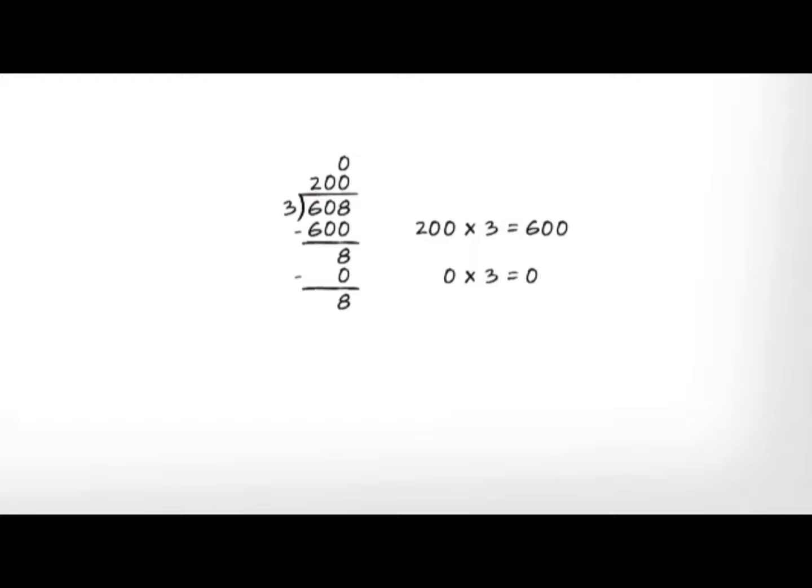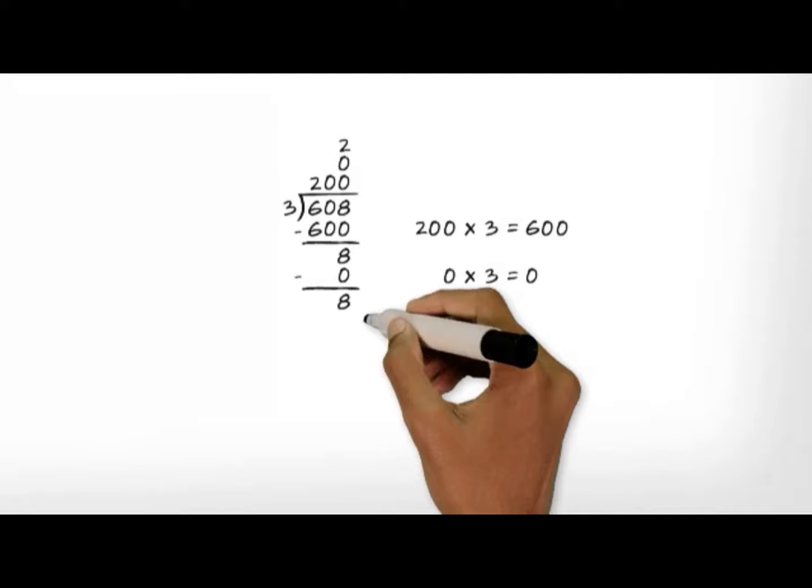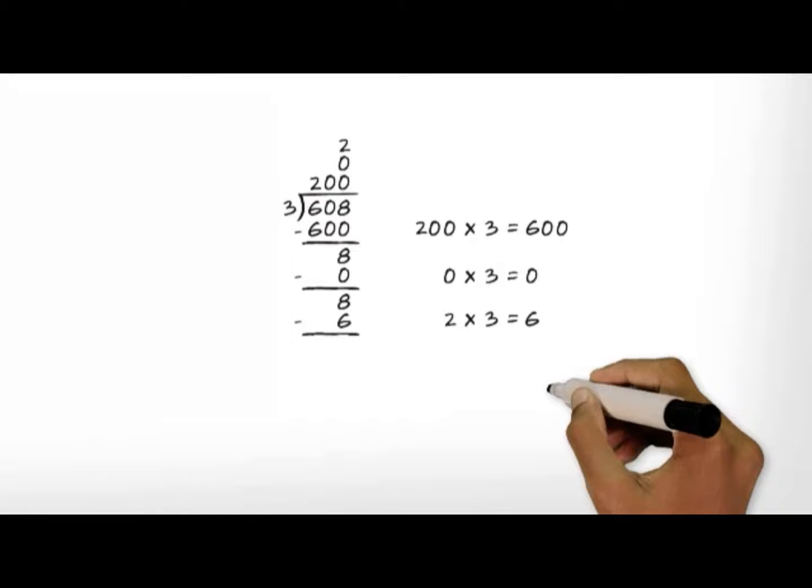Now we can try to take out another group of 3. This time, we'll need to use a multiple of 1, though. We already know 2 groups of 3 is equal to 6, because 2 times 3 equals 6. We now take out 6 from 8 and have 2 left over. Since we can't take out any more groups of 3 from 2, we're just about finished.